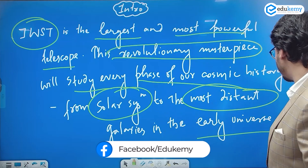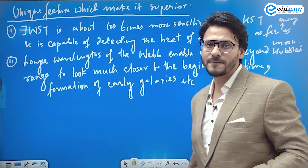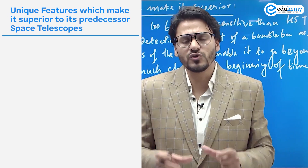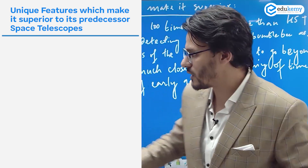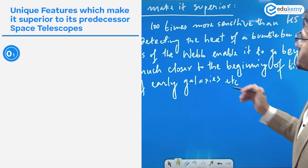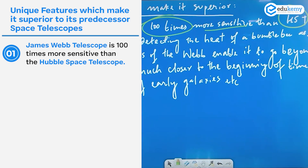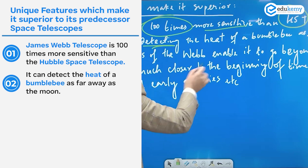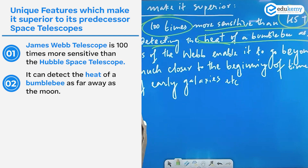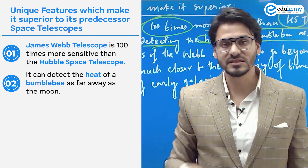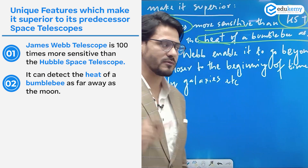Now let's look at the unique features that make the James Webb Telescope superior to the Hubble Space Telescope. First, it is 100 times more sensitive than the HST and is capable of detecting the heat of a bumblebee as far away as the Moon — that's how powerful this telescope is.